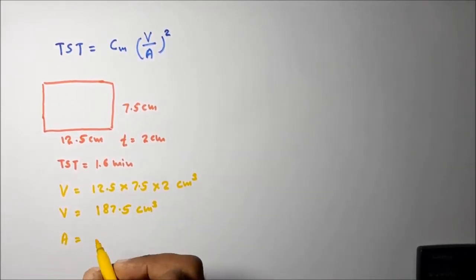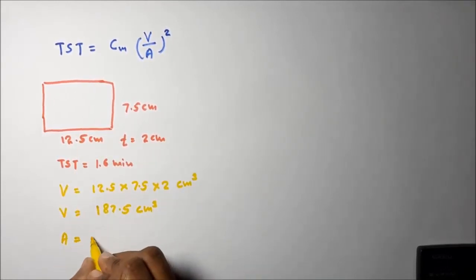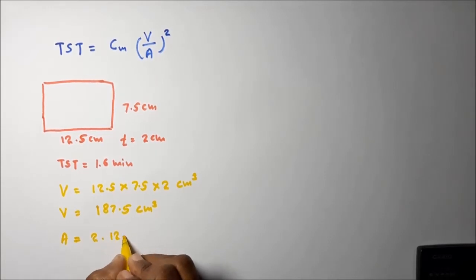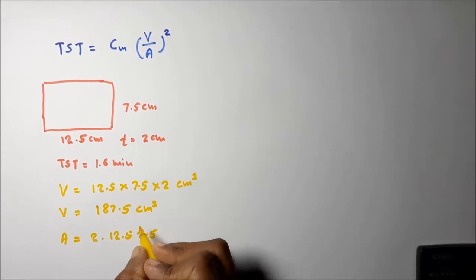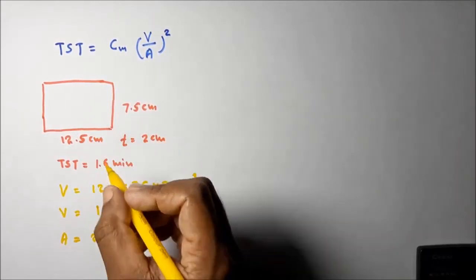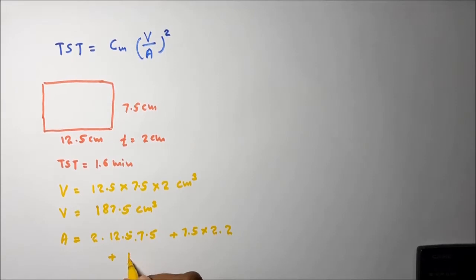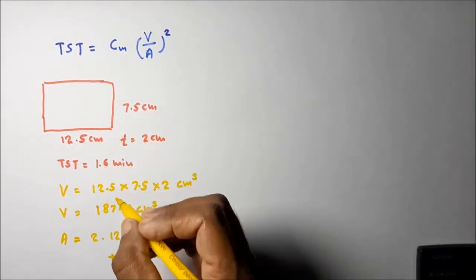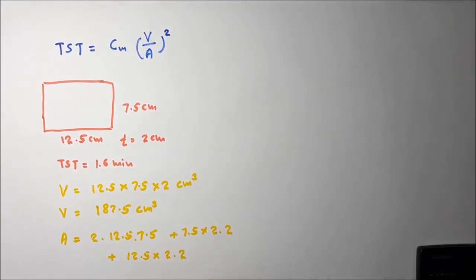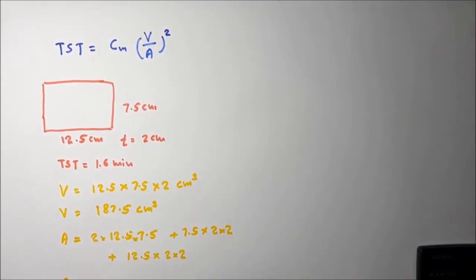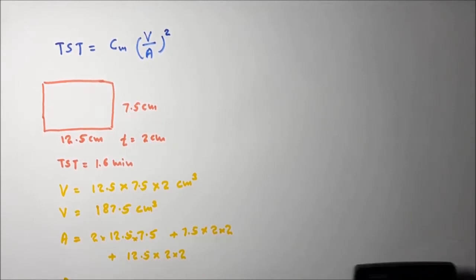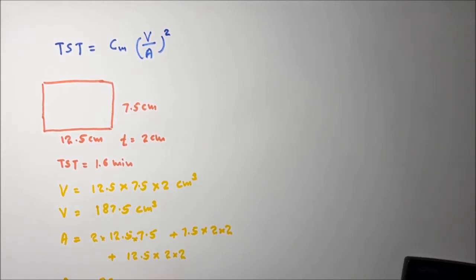Then the surface area can also be calculated. The total area is equal to: 2 × (12.5 × 7.5) for the two flat faces, plus (7.5 × 2 × 2) for the two side faces, plus (12.5 × 2 × 2) for the remaining two faces. The total area is equal to 267.5 square centimeters.